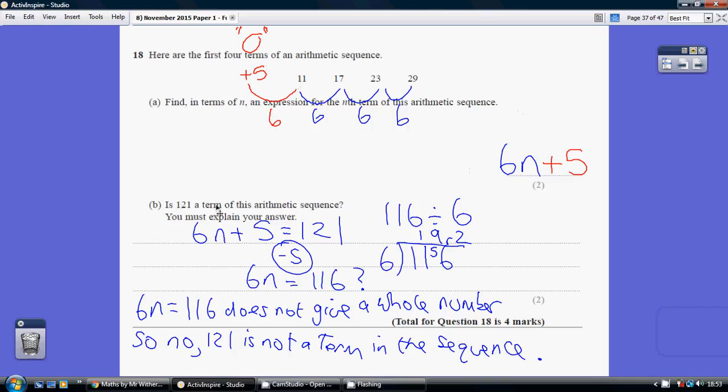Now is 121 a term of this sequence? Well set 6n plus 5 to equaling 121 and we're going to see whether n would be a whole number or not. If n is a whole number, then it would be a term. If it's not a whole number, then it's not a term.